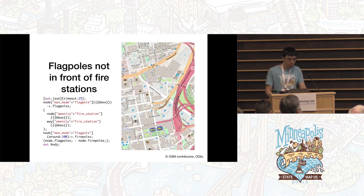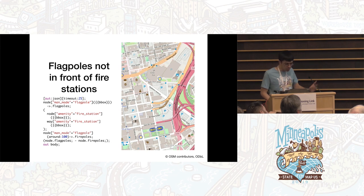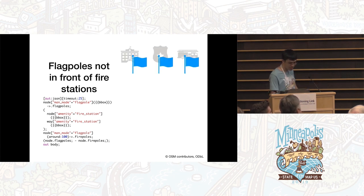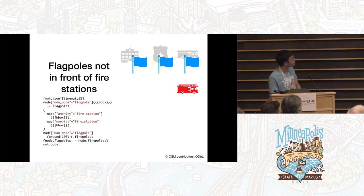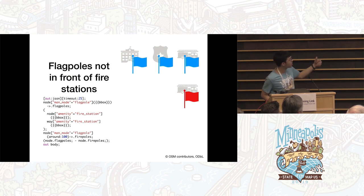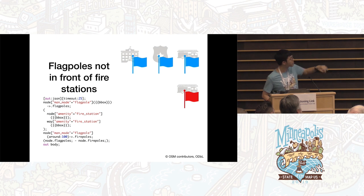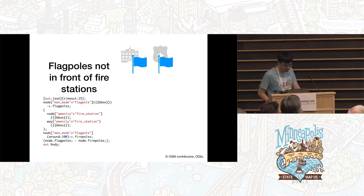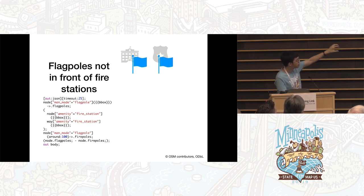There isn't a 'not near' filter, but we can achieve the same effect using a difference statement, which can be used for a number of purposes. This query finds flagpoles that are not in front of fire stations. First we find all the flagpoles and save them as the flagpole set using the arrow operator. Then we find the fire stations — mapped as nodes or ways. Then we find the flagpoles within 100 meters of those fire stations, saved as 'firepoles'. Then we subtract one from the other: that syntax is the first set minus the second set inside parentheses, like when you're unioning two sets. Just pay attention to where the semicolons are.